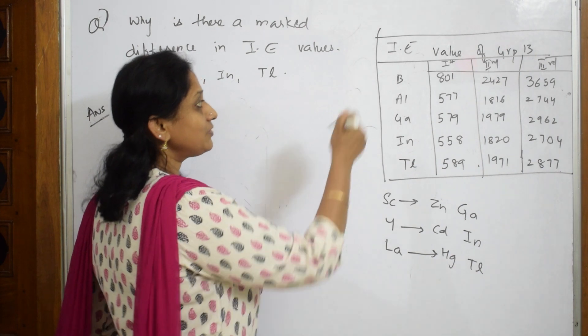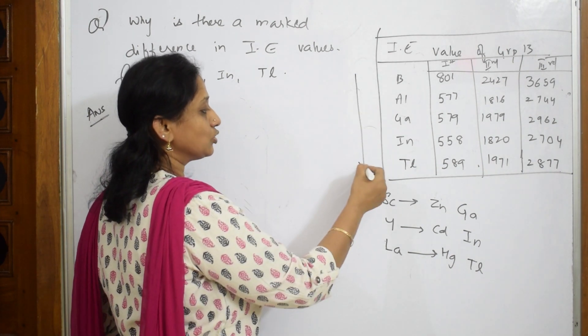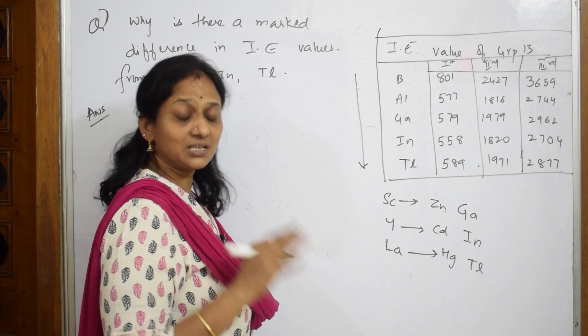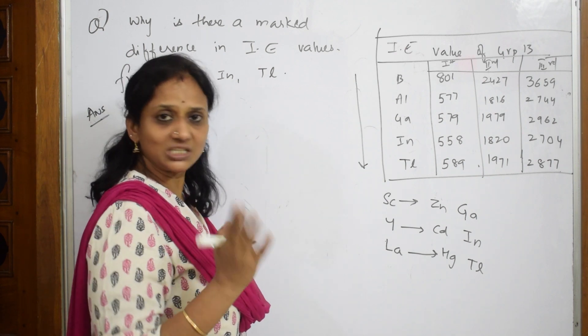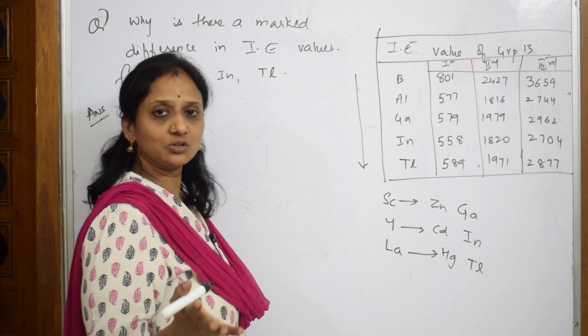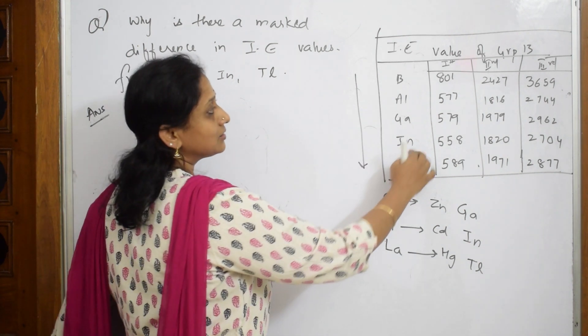Let's see. Normally when I move from top to bottom in a group, atomic number increases. When atomic number increases, it's easier to remove an electron because the number of shells increases. With less energy I can take out the electron. But what is happening here?